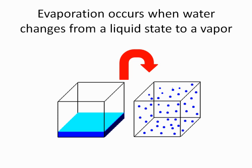For evaporation to occur, heat from the sun is needed. Heat energy breaks down the bonds that hold the hydrogen and oxygen molecules together, and if the temperature is warmer, evaporation occurs faster than in cooler weather. Water is also evaporated from leaves of plants, which is called transpiration. Essentially, water moves from the root of the plant to the leaves and is then converted into water vapor, which is represented in 10% of water vapor in the atmosphere.